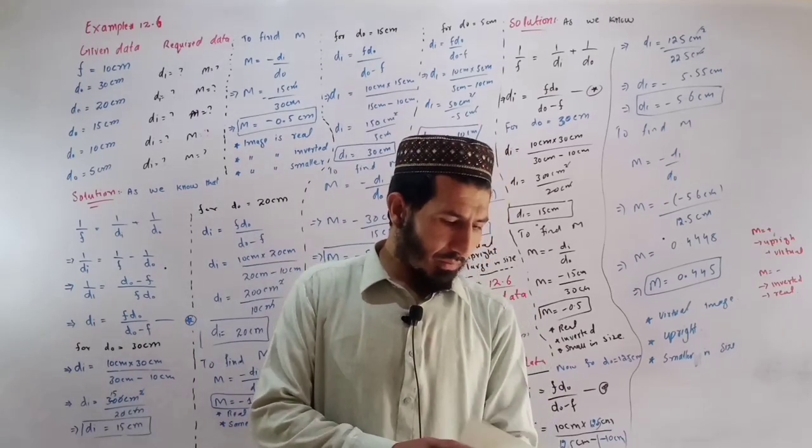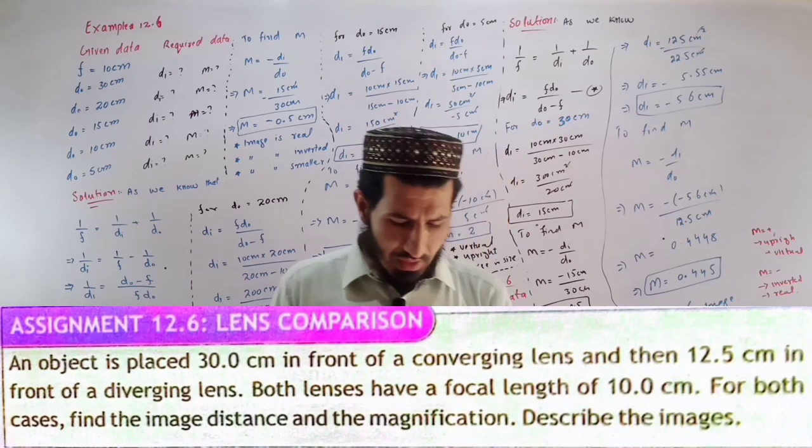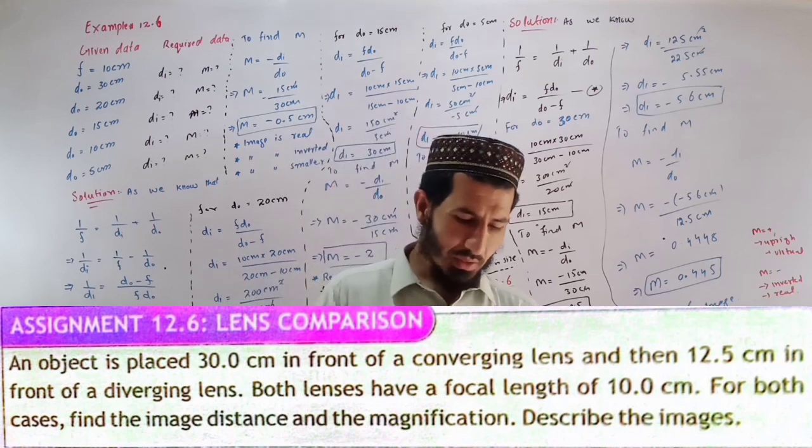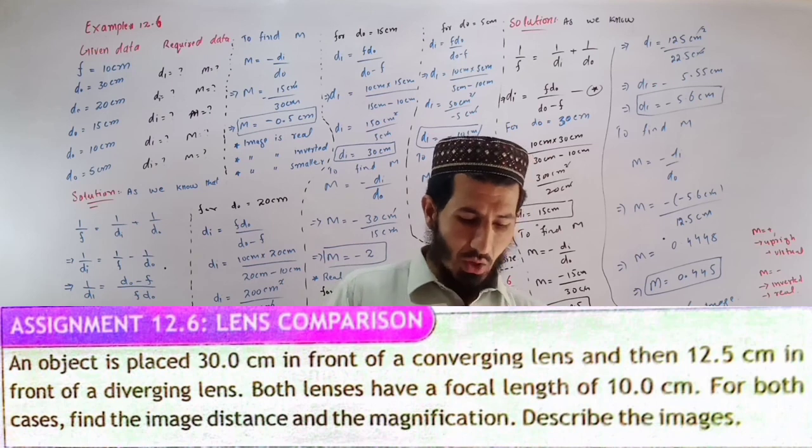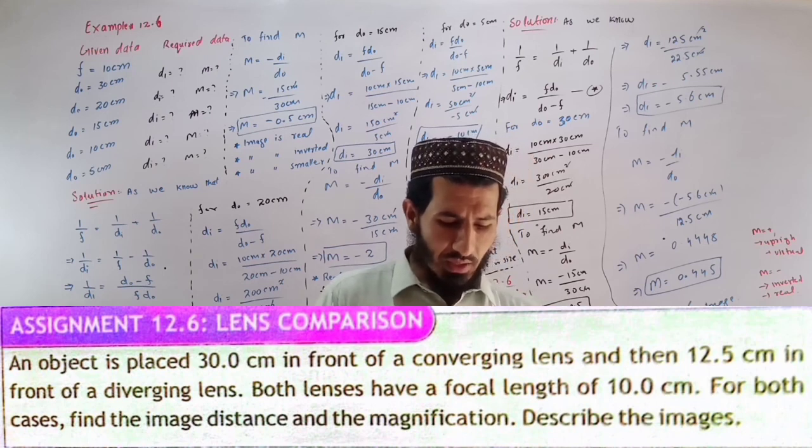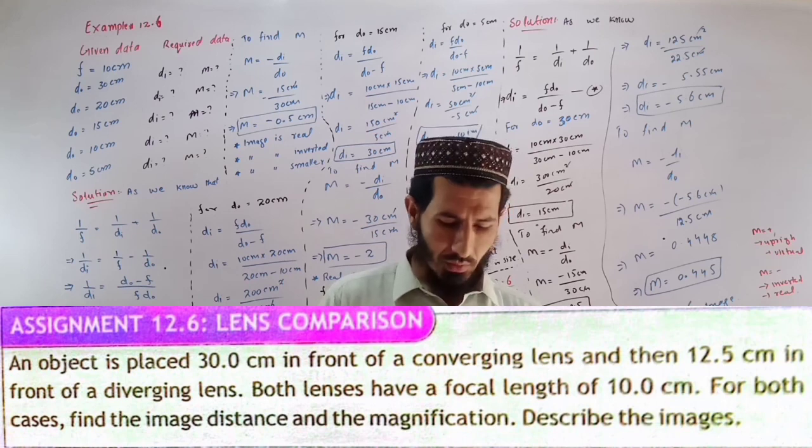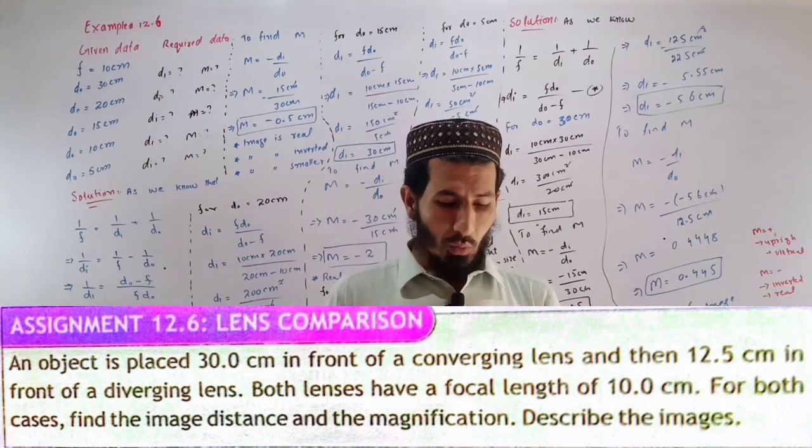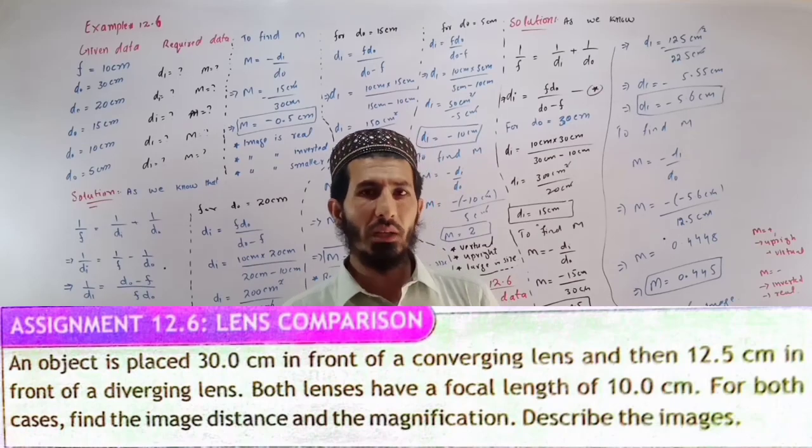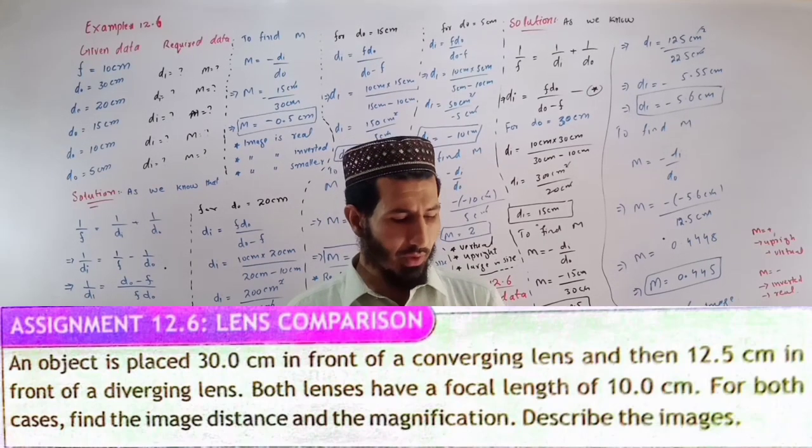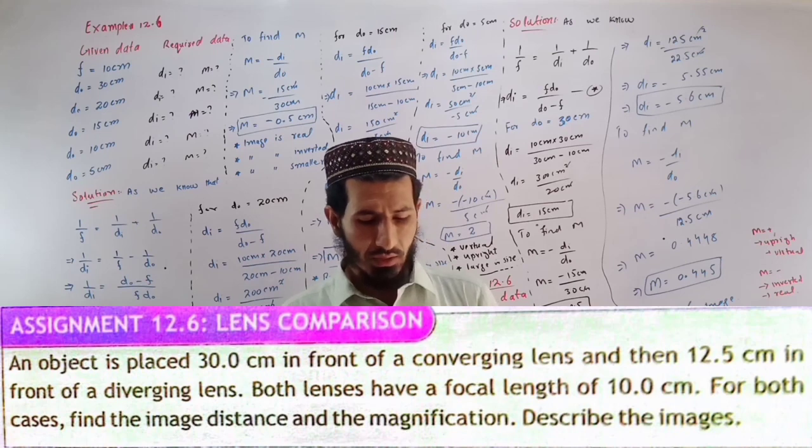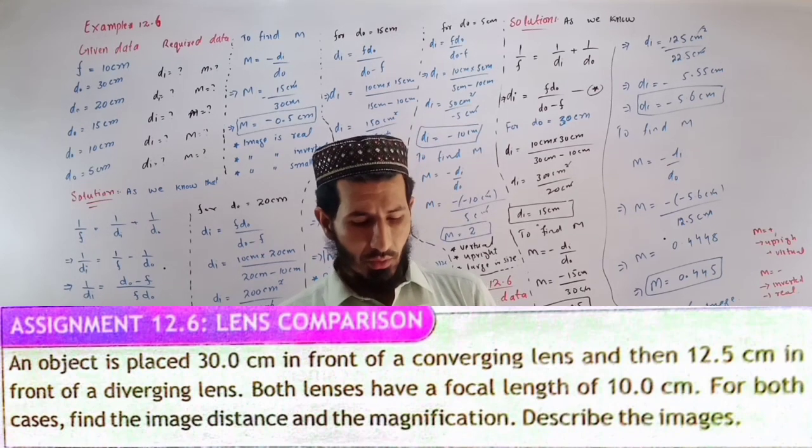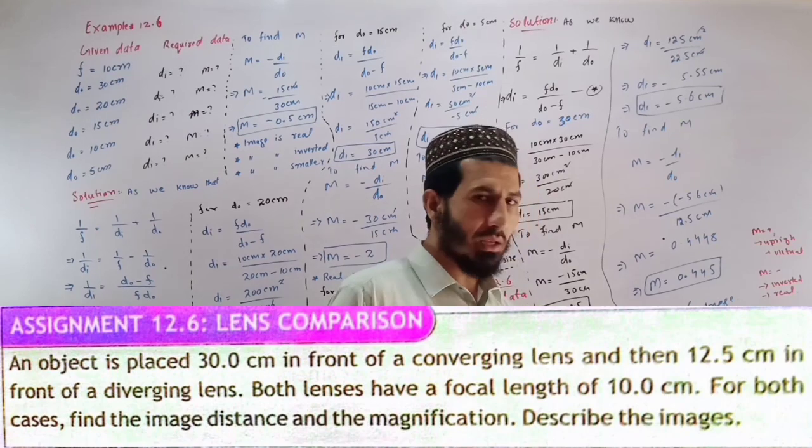Assignment 12.6: An object is placed 30 cm in front of a converging lens and then 12.5 cm in front of a diverging lens. Both lenses have a focal length of 10 cm. For both cases, find the image distance and magnification to describe the images.